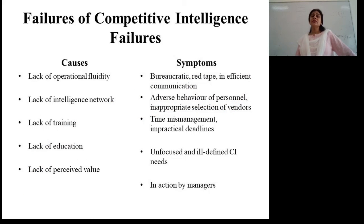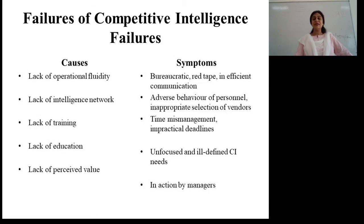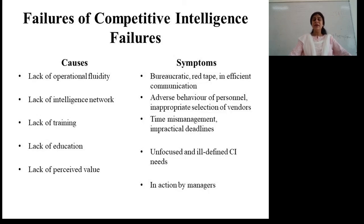There are certain reasons why competitive intelligence fails. The causes include lack of operational efficiency — the processes designed are not able to collect or analyze the right information from the environment. Lack of intelligence is natural — the people involved in CI are not well-equipped, trained, or do not have conceptual clarity. Lack of training, lack of education, and lack of perceived value. Symptoms include bureaucratic red tape and inefficient communication. Further symptoms are adverse behavior of personnel, inoperative selection of vendors, time mismanagement, impractical deadlines, unfocused and ill-defined competitive intelligence needs, and managers being unable to carry out competitive intelligence effectively.